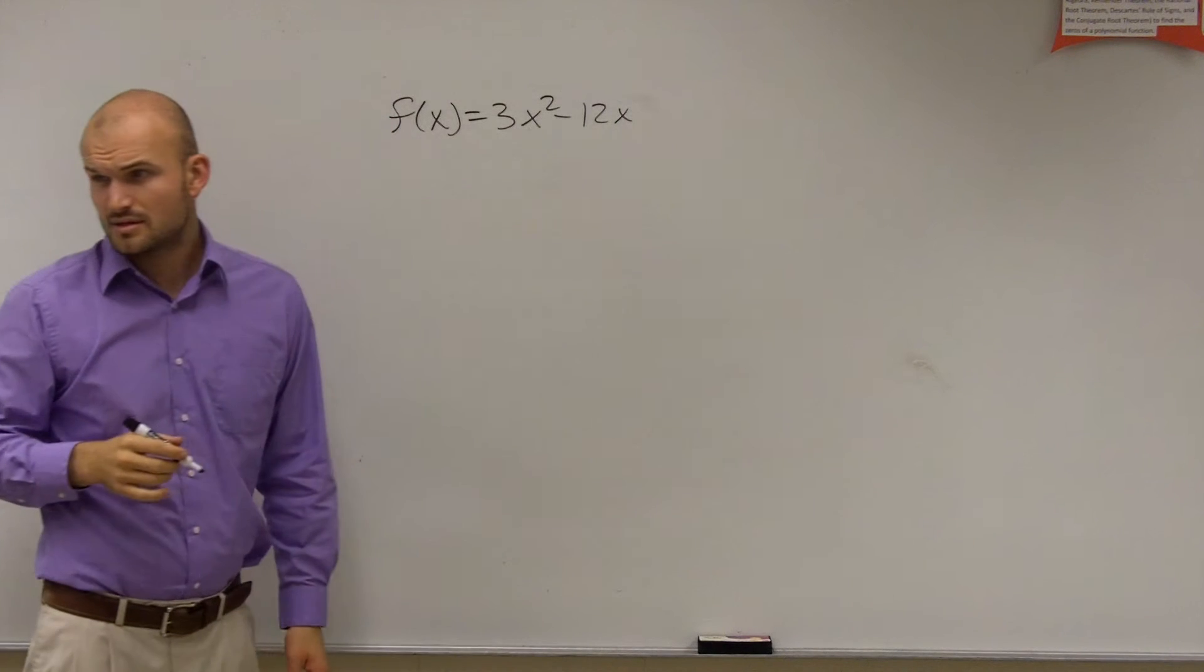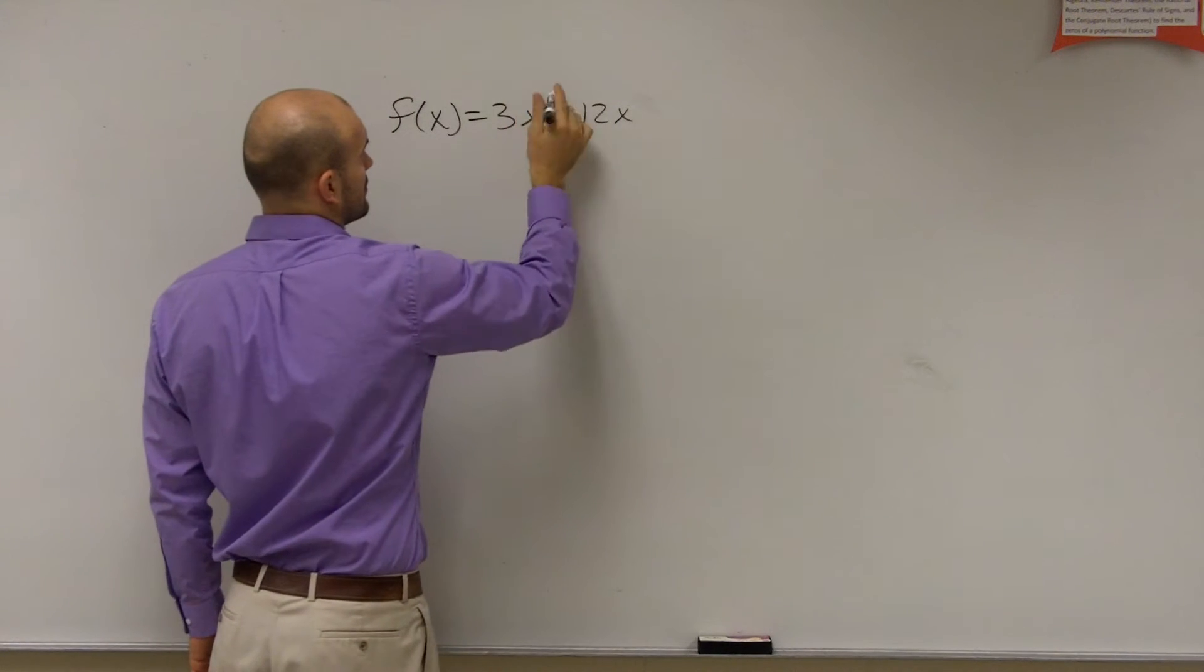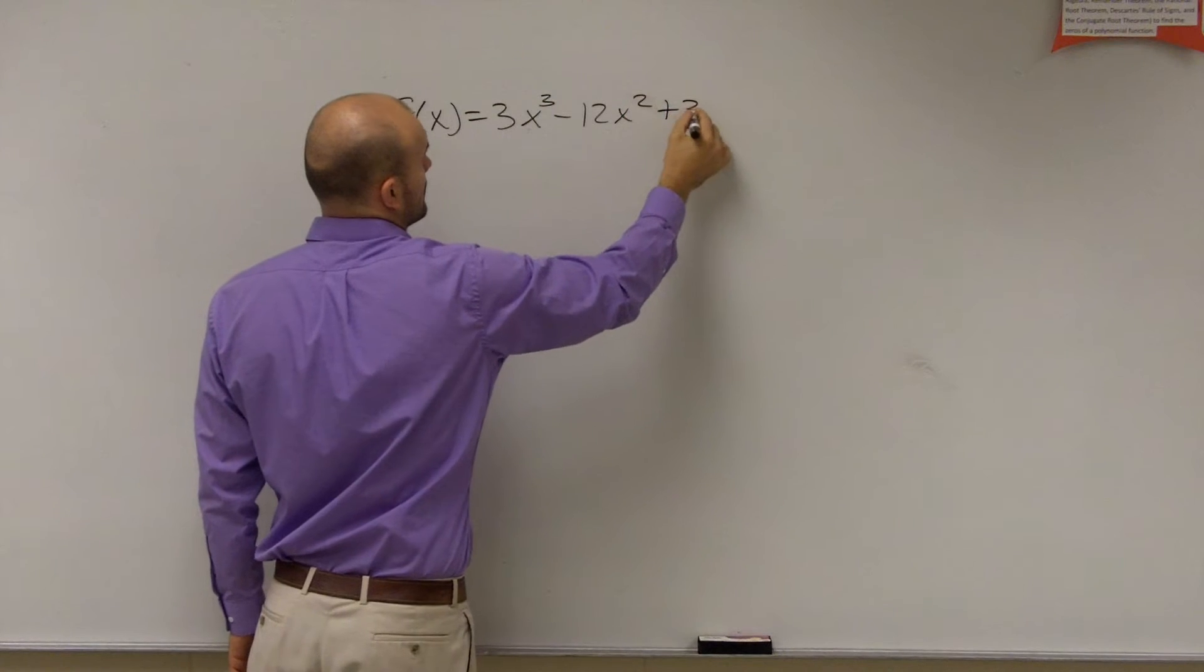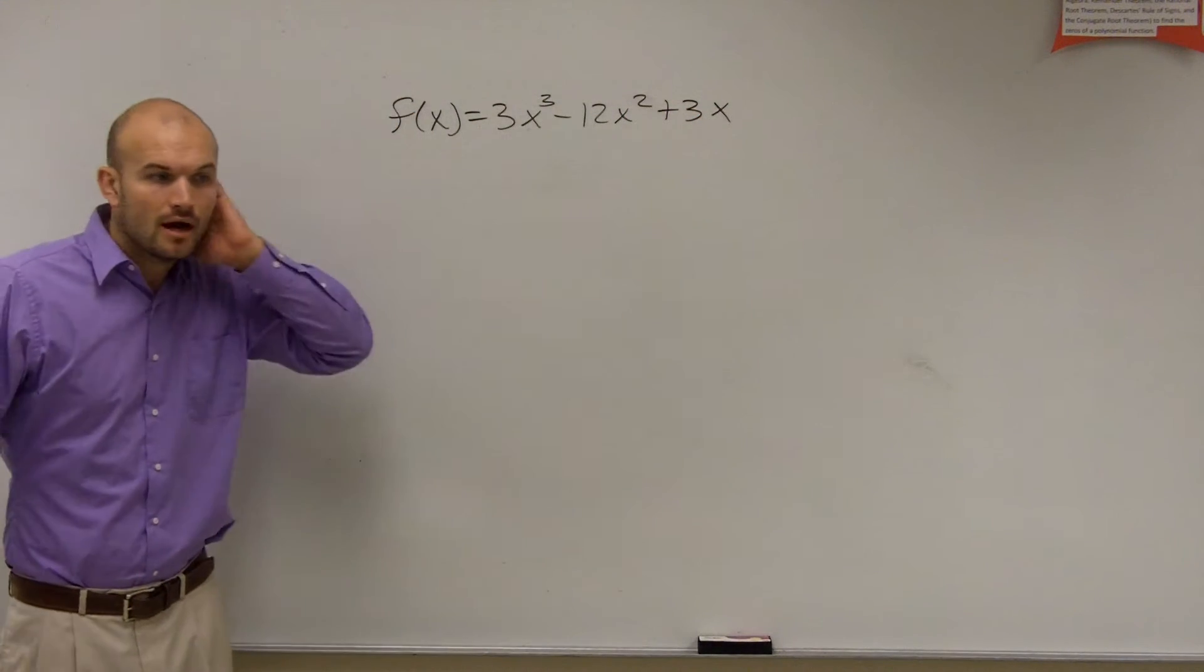Wait, 3x to the fourth? 3x to the third minus 12x squared plus 3x. Okay, that's right? Very good.